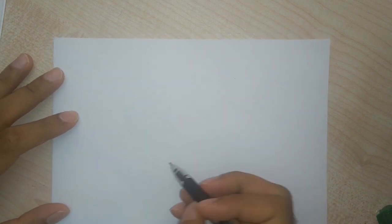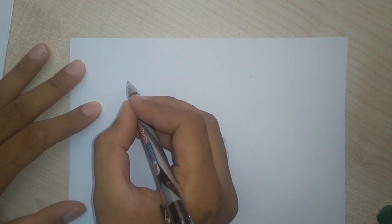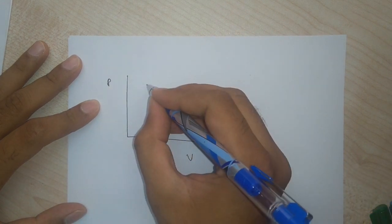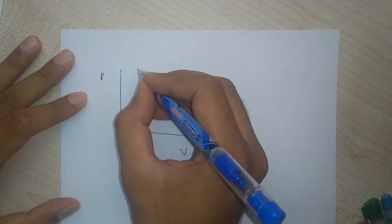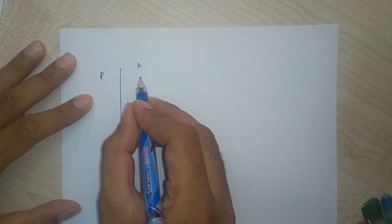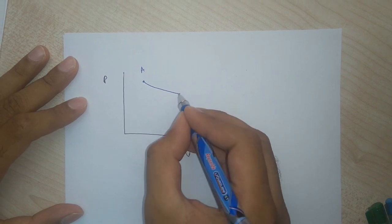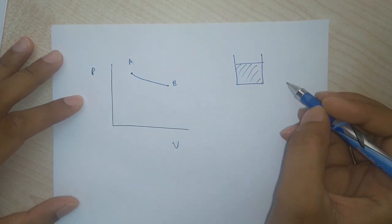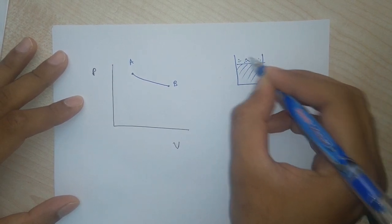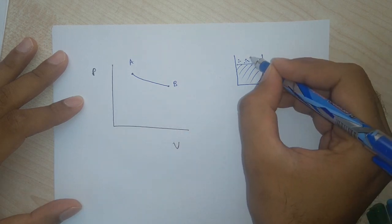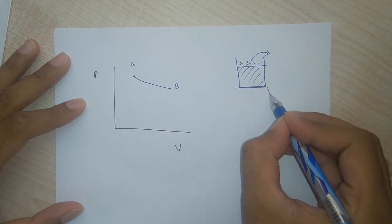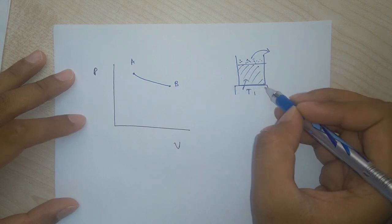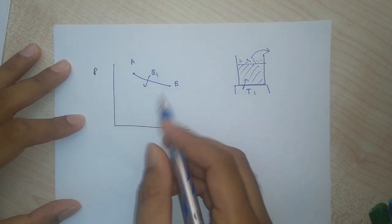In the previous lectures we started the Carnot cycle on the PV plane. We had a gas at some point A, and then we isothermally expanded the gas to some point B. We had a piston with some ideal gas and weights on it. To go from A to B, which is an isothermal process, we removed grains of sand and kept it on a reservoir of temperature T1. As we removed the grains, the pressure decreased, the volume increased, and some heat Q1 was given into the system.